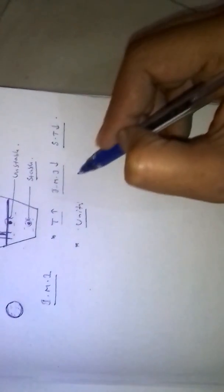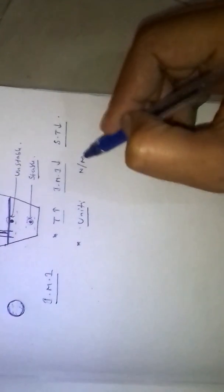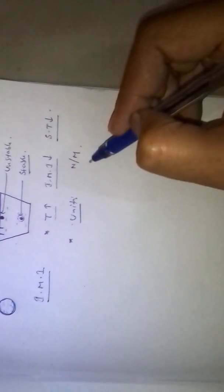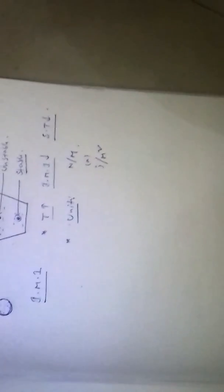The units of surface tension are newton per meter or joule per meter squared.